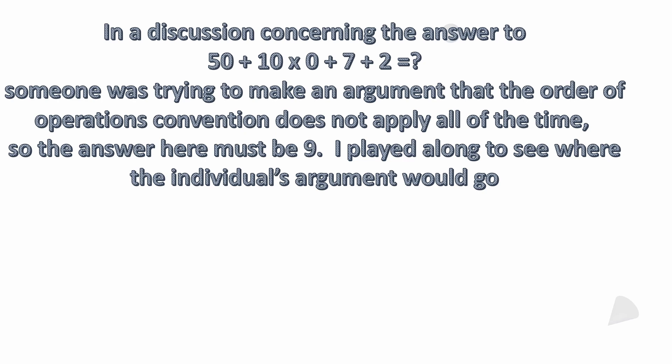There was an online discussion concerning the answer to the problem 50 + 10 × 0 + 7 + 2. Someone was trying to make an argument that the order of operations convention does not apply all of the time. It certainly applies when you have multiple operations, but their thought was no, it doesn't apply all of the time, so the answer must be nine — they were just solving left to right.